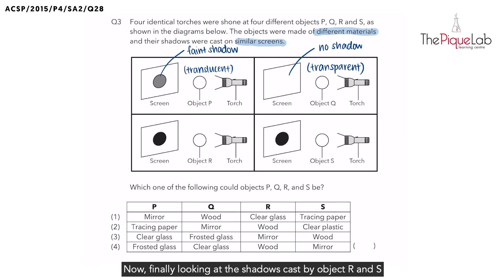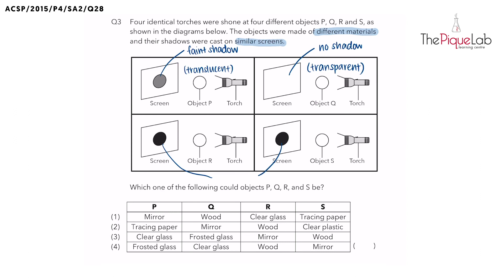Finally, looking at the shadows cast by object R and S, we can observe that they both cast a dark shadow. Since they both cast a dark shadow, that means all light from the torch was blocked by object R and S. So what can you tell me about the transparency of R and S? They are both opaque.